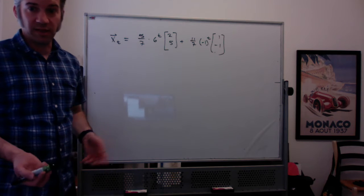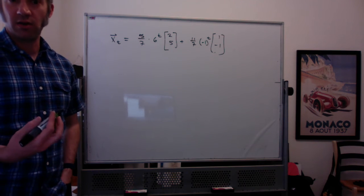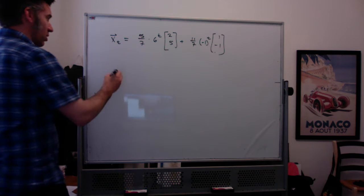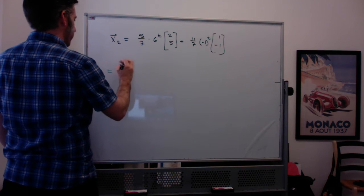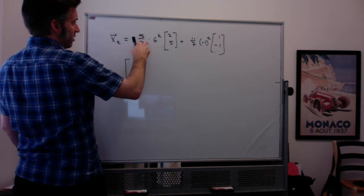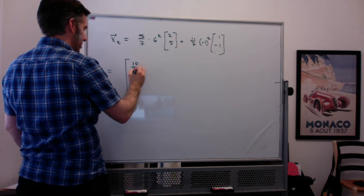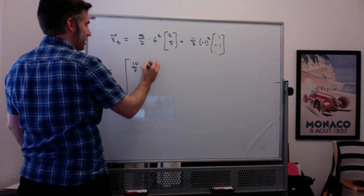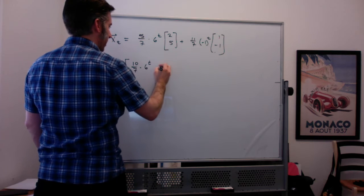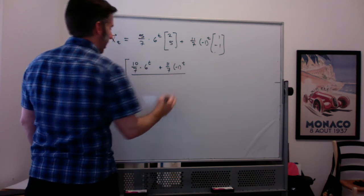The other thing to say about this is this can also tell you what the stable age distribution is of juveniles to adults. So if you actually write this out as one vector, it's kind of gross looking, but so this times this times this, 2 times 5 sevenths is 10 sevenths times 6 to the t, and 11 times 1 is 11 sevenths times negative 1 to the t.